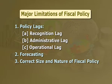Number three: correct size and nature of fiscal policy. The most important necessity for the success of fiscal policy is the ability of public authority to frame the correct size and nature of fiscal policy on the one hand and to foresee the correct timing of its application on the other. It is too much to expect that the government would be able to correctly determine the size, nature, composition, and appropriate execution time of fiscal policy.